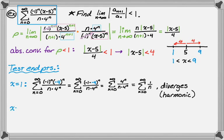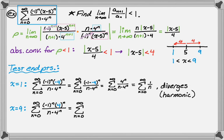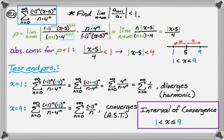Now test x equals 9. Replace every x with 9: 9 minus 5 is 4, so x minus 5 to the n becomes 4 to the n, and that cancels with the 4 to the n in the denominator. We're left with negative 1 to the n over n, which converges by the alternating series test — you could also call it the alternating harmonic series. So the series converges at x equals 9. Our interval of convergence is from 1 to 9, not including 1 but including 9.